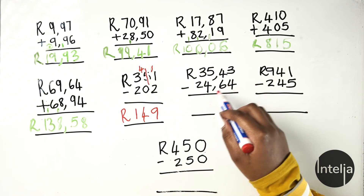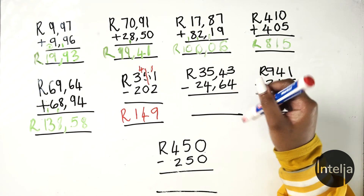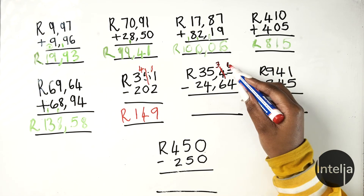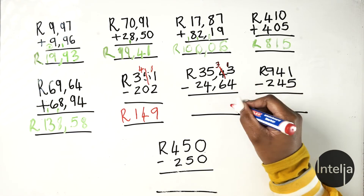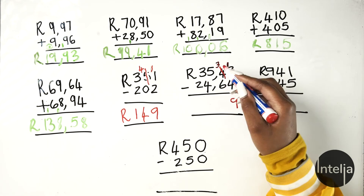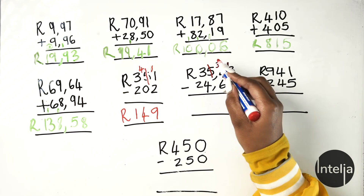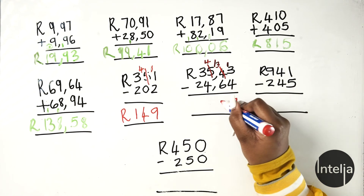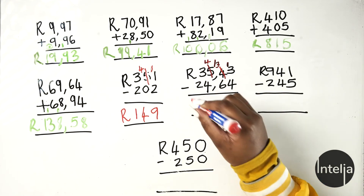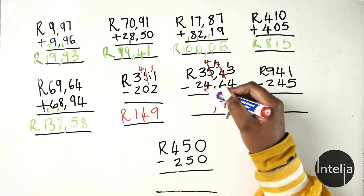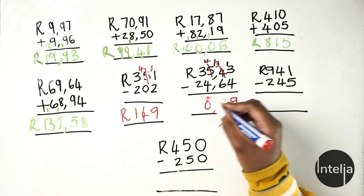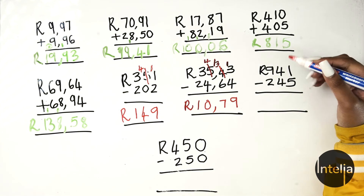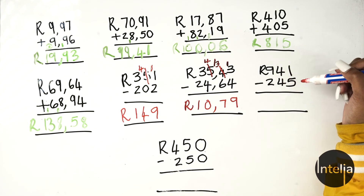Moving on to the next: 35 rands 43 cents minus 24 rands 64 cents. 3 minus 4 — you need to borrow from your neighbor, so you have 13 and your neighbor remains with 3. 13 minus 4 gives you 9. Then 3 minus 6 — borrow again, neighbor remains with 4, so 13 minus 6 is 7. Don't forget your comma. 4 minus 4 is 0, and 3 minus 2 is 1. Your answer is 10 rands 79 cents.